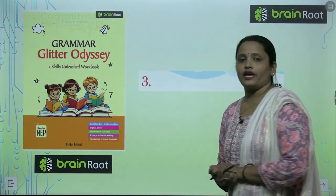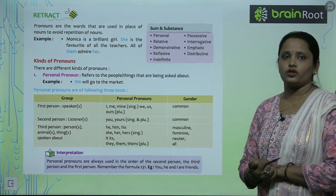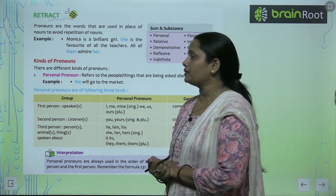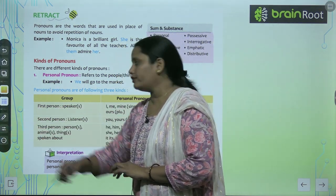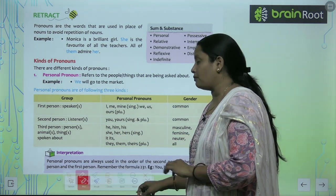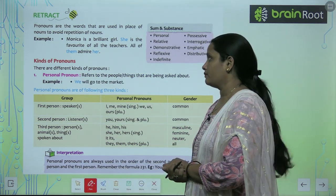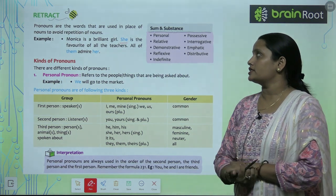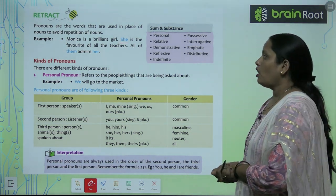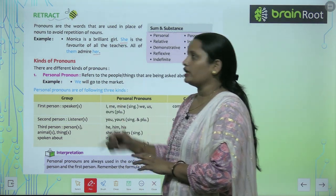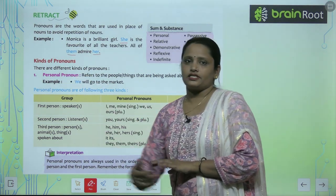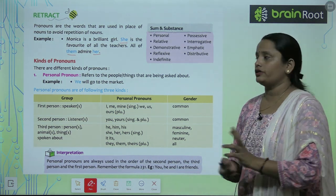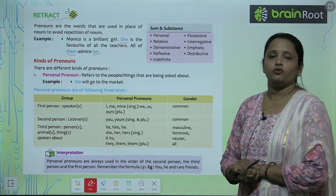As we have learned about nouns in the previous chapter, here we are going to learn about pronouns. Pronouns are the words that are used in place of a noun to avoid repetition. For example: Monica is a brilliant girl. Now she is the favourite of all the teachers. All of them admire her. The underlined blue words here are all pronouns.